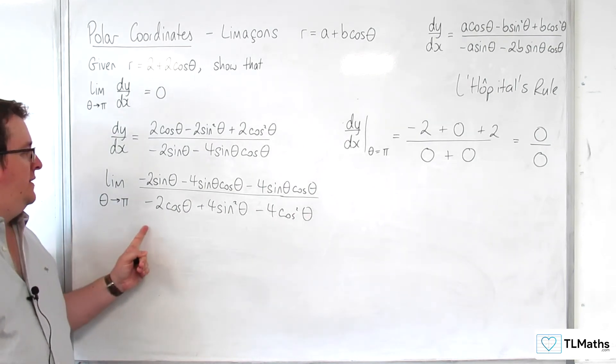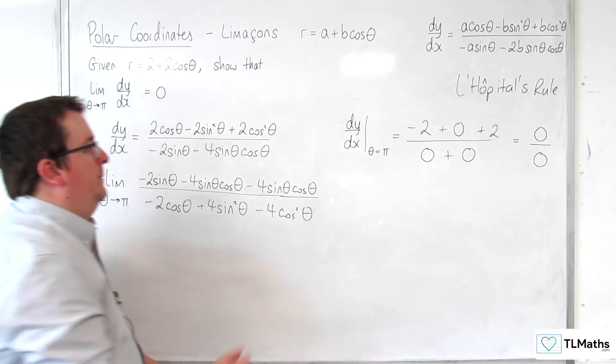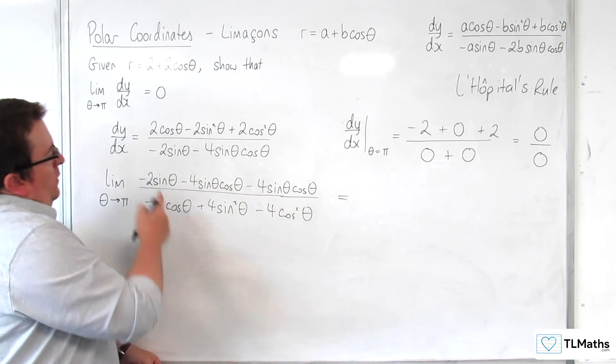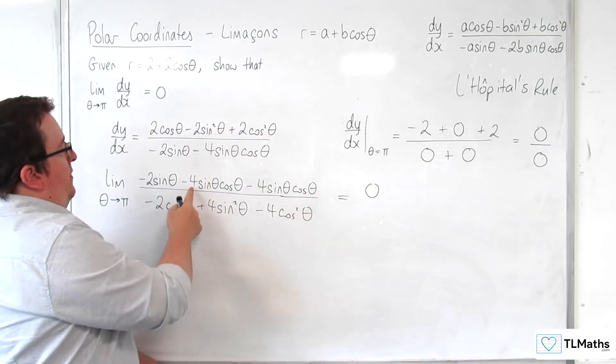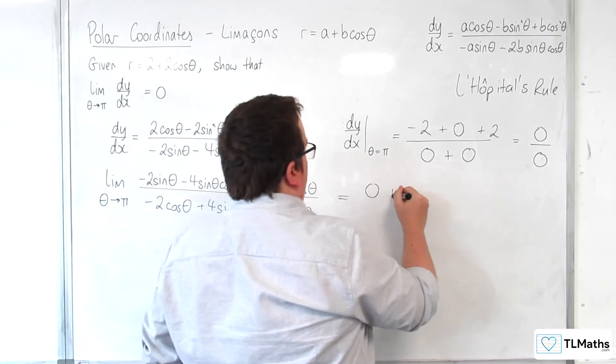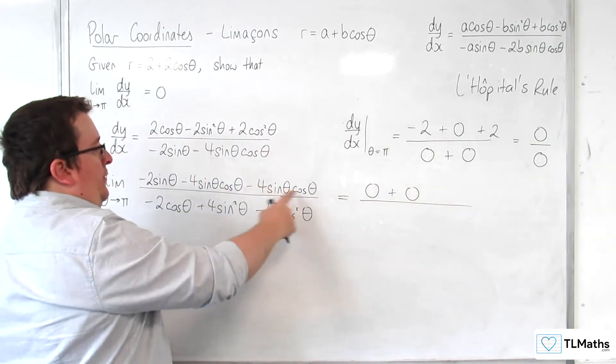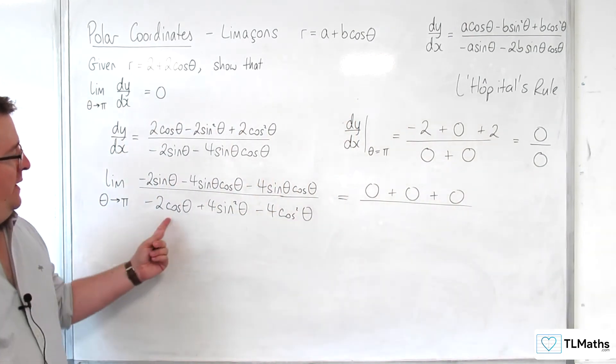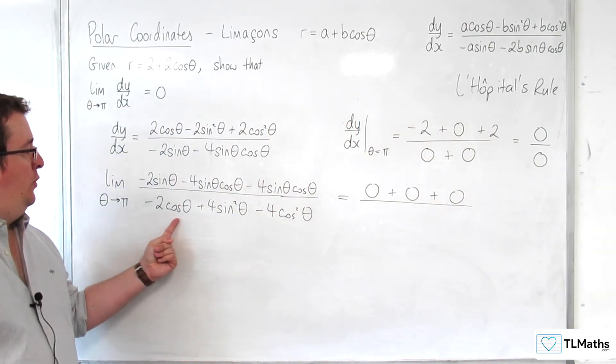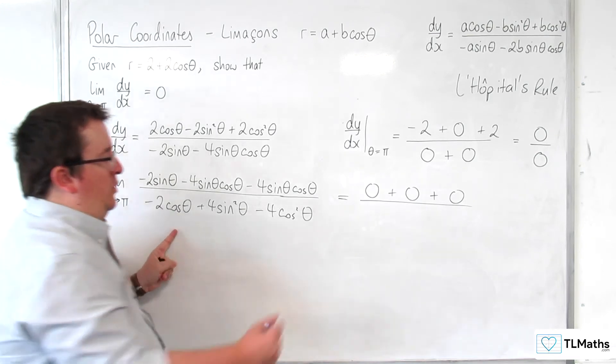So as theta tends to pi, we get 0, then 0, and then 0 in the numerator. In the denominator, we get minus 2 times minus 1, which is 2.